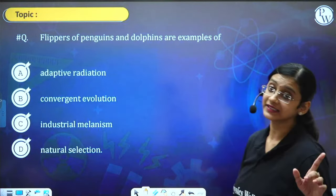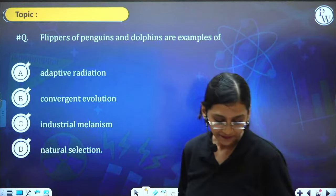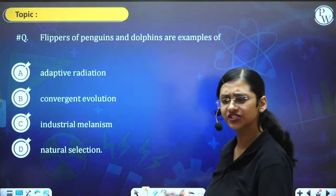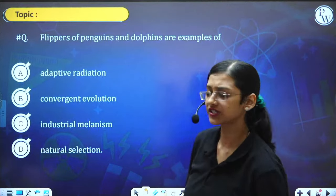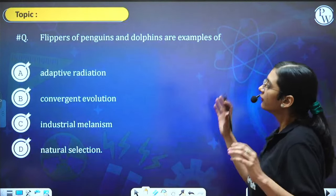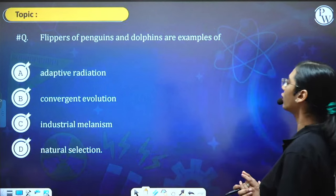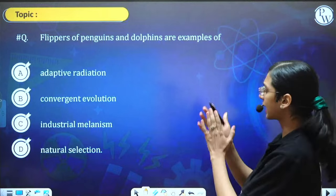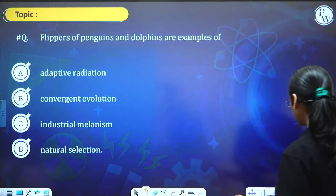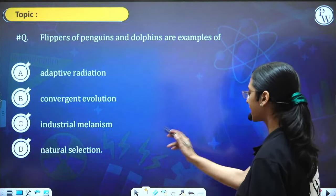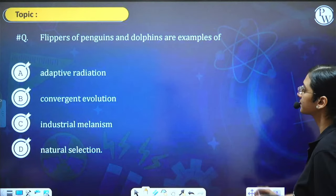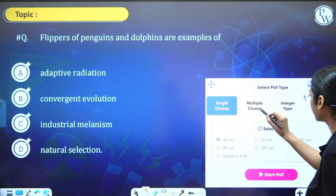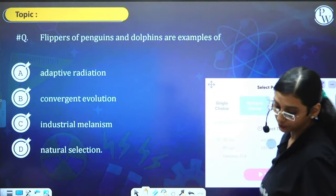Next question. I won't give the leaderboard immediately — first finish more questions, then leaderboard. Next question: Flippers of penguins and dolphins are examples of — A) adaptive radiation, B) convergent evolution, C) industrial melanism, D) natural selection. Let me give the poll first.